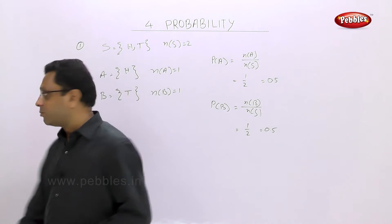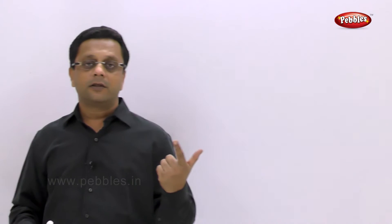You should practice writing the sample space for 2 coins, 3 coins, 2 dice, and also 2 balls, 3 balls. You should have practice of writing this, because at the time of exam you should not be calculating there and then. Whenever the sample space is big, you should have practice.